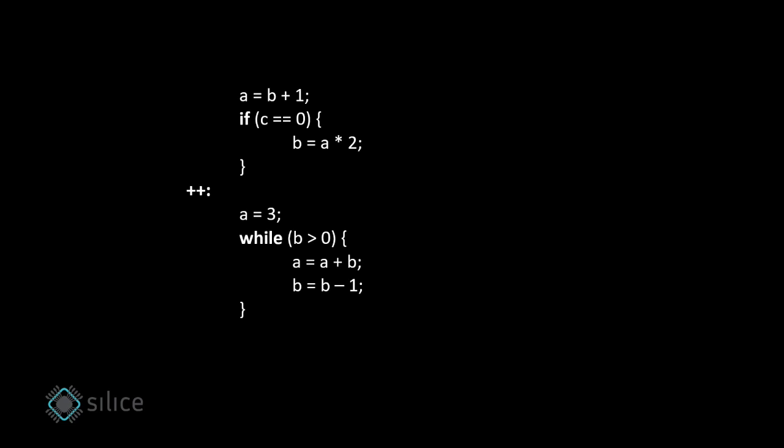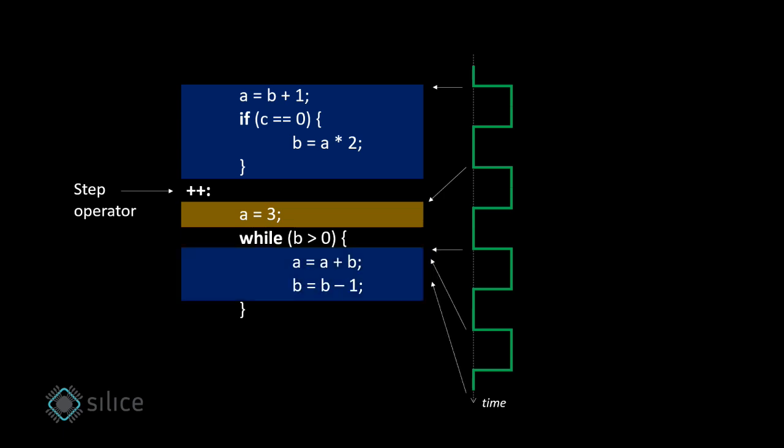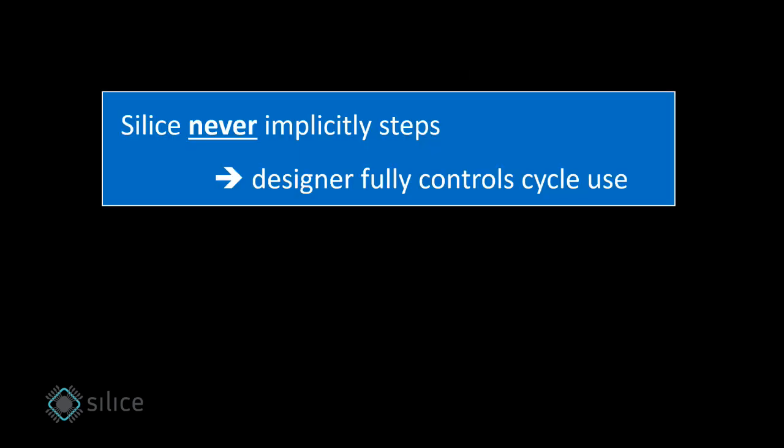Here is an example program in Silice. Let's see how this translates into computations per clock cycle. Here is our clock signal. On the first cycle, this blue block will be active. On the second cycle, this brown block is active. The reason this line was split to a different cycle is because the programmer used the step operator. Next, we have a loop, and the block inside the loop will be active every cycle after that, for a number of times depending on the value of b. As you can see, the syntax itself shows us how the computations will map to clock cycles. And this is a very important concept of Silice.